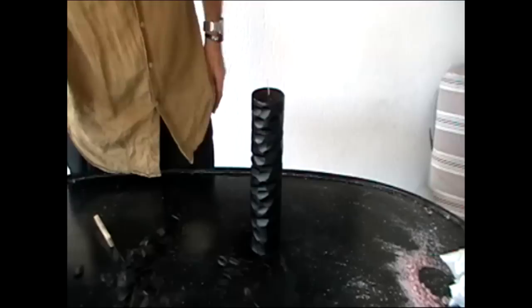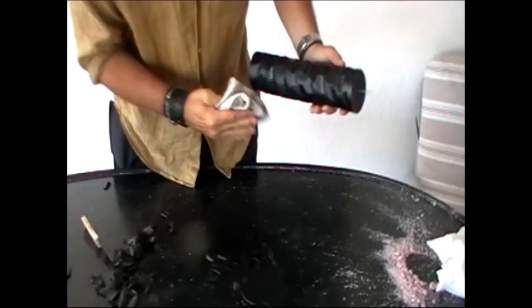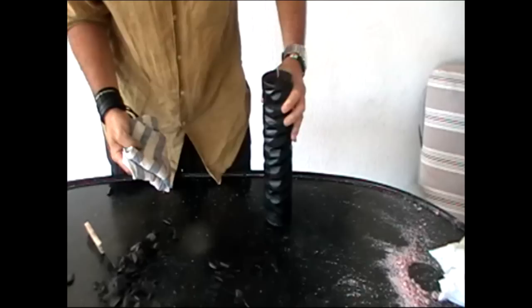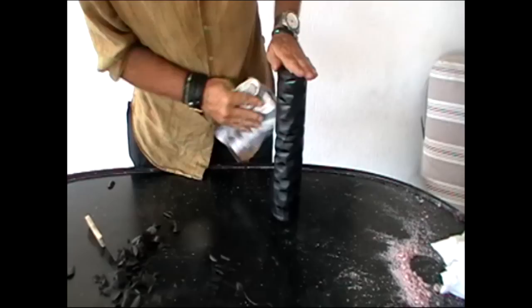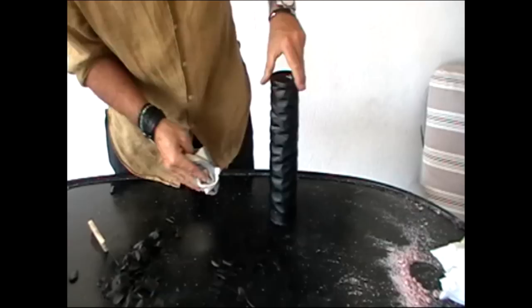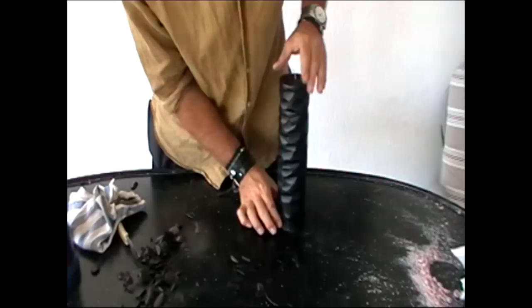Once this is done take a soft cloth and wipe the candle off from top to bottom. After you've done that then coming from side to side around the candle, buff up the candle and put a nice shine on it. The whole idea is to reflect the light and there you see the finished look.